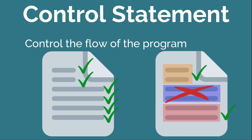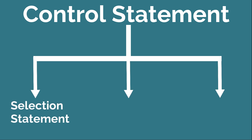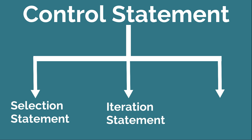Now let's see the different types of Control Statements we have in Java. Basically, Control Statements are divided into three different types: Selection Statement, Iteration Statement, and Jump Statement. Let's understand each of these statements and what different types they contain in detail.